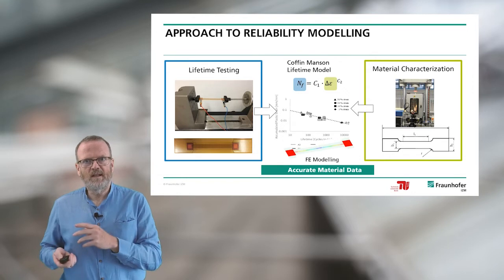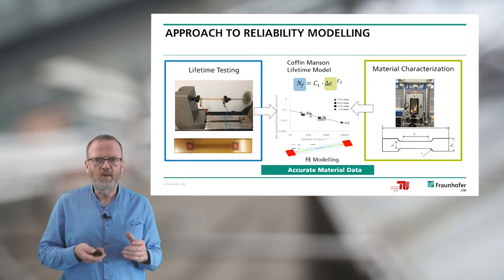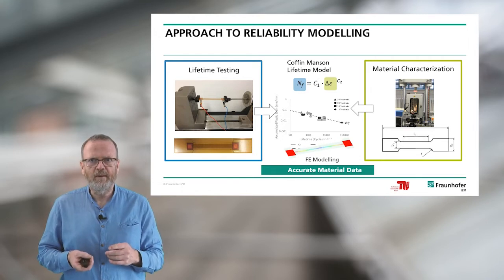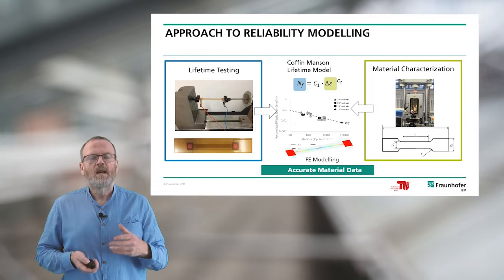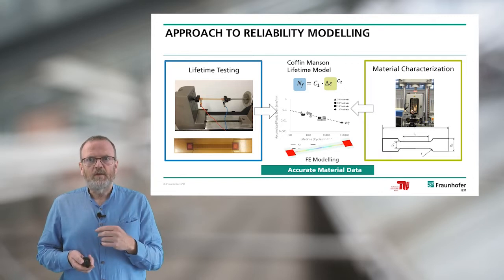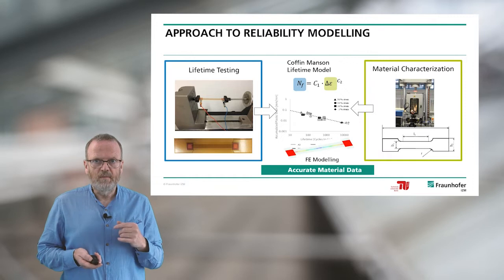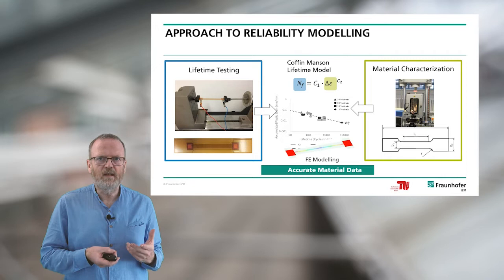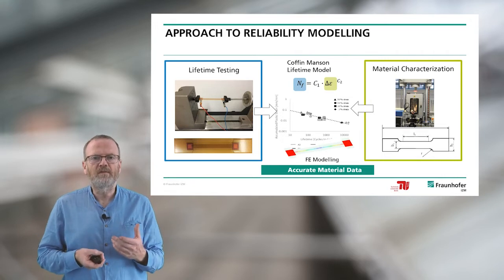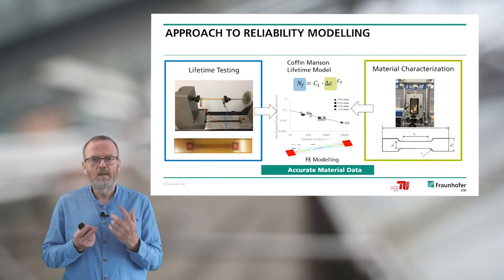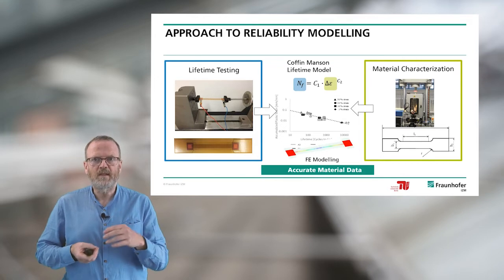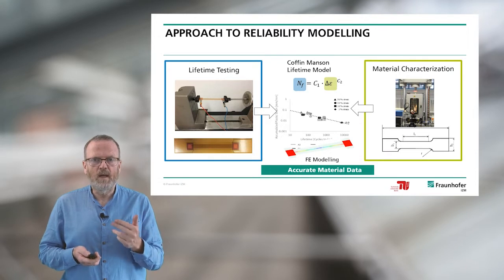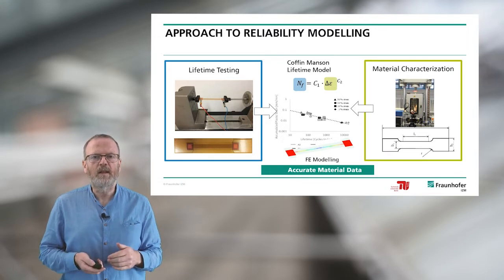Both materials data and lifetime testing results are used for the modeling. You see in the middle the typical Coffin-Manson diagram for determination of the lifetime model. With the materials calculation we describe the strain properties delta epsilon, and for the lifetime cycle we determine the critical value of failure NF. We analyze the parameters C1 and C2, and all four parameters — NF, C1, C2, and delta epsilon — are used for the modeling of the lifetime.